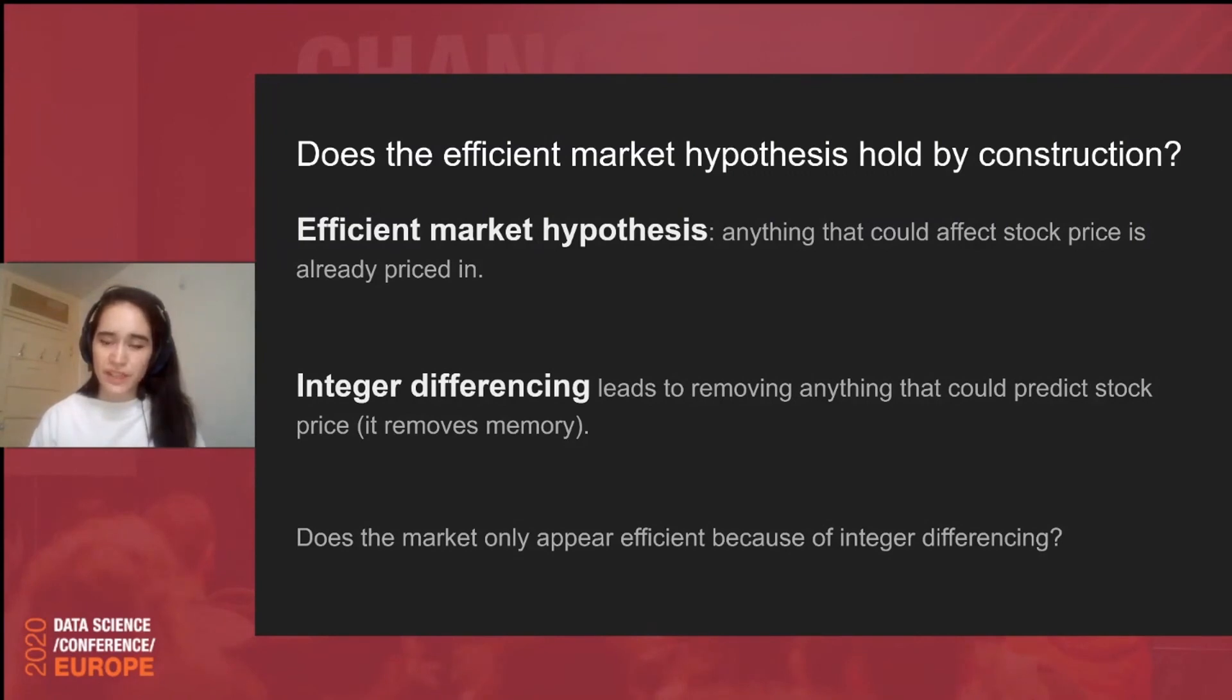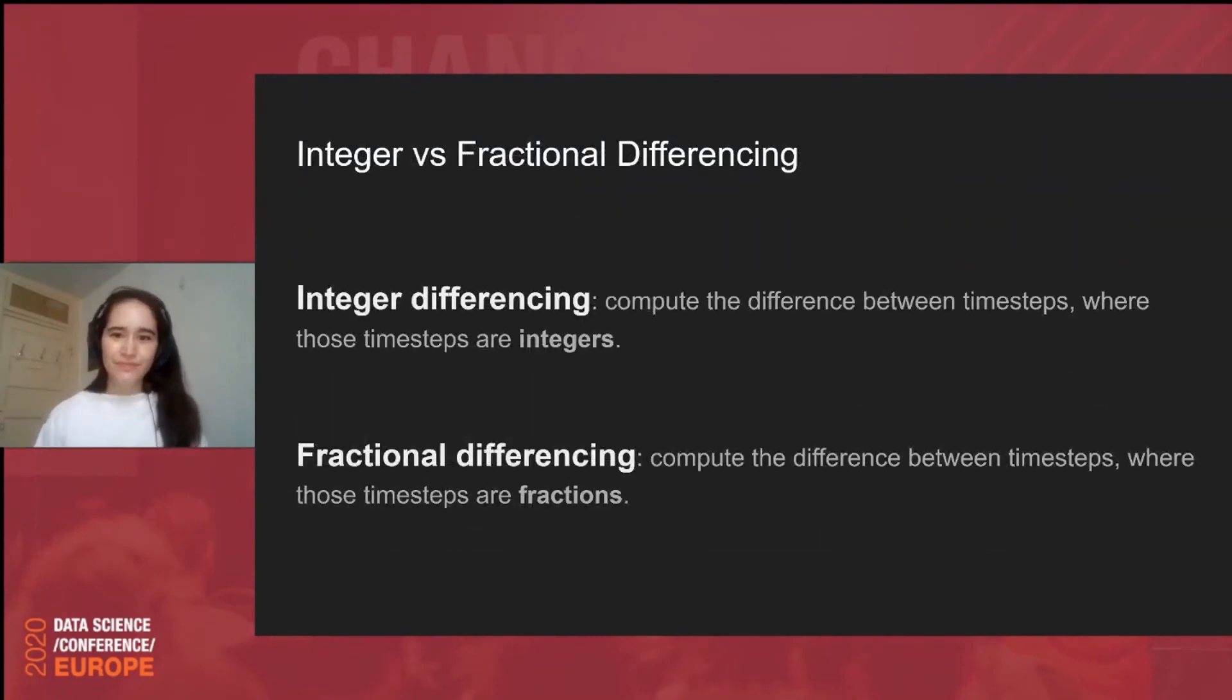So, what we're doing then is creating an environment where the efficient market hypothesis essentially holds by construction. The hypothesis states that markets can't be predicted, but we're doing integer differencing of our time series so much that markets can't be predicted. So, it's a bit of a strange situation. So, then what is a well-trained data scientist to do? If we're stripping away useful memory from stock data by doing integer differencing, but we need stationary data in order to use our models, so what solution is out there?